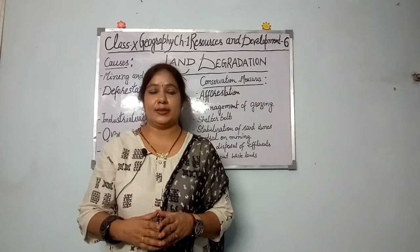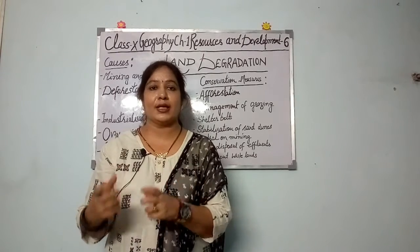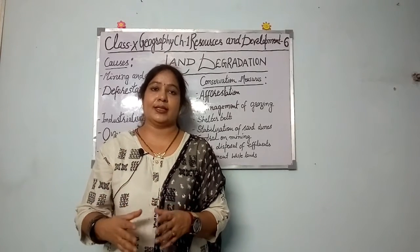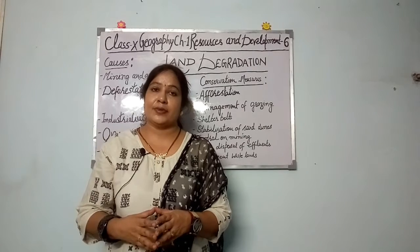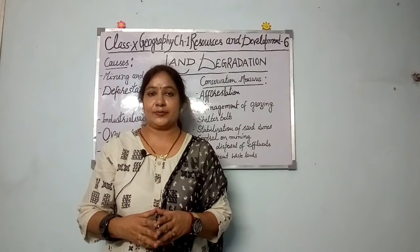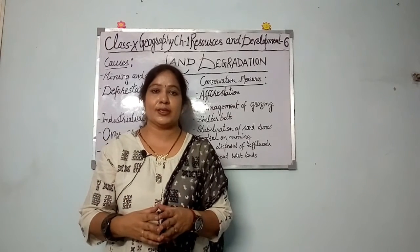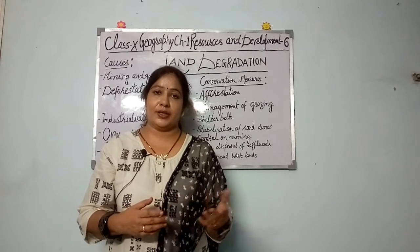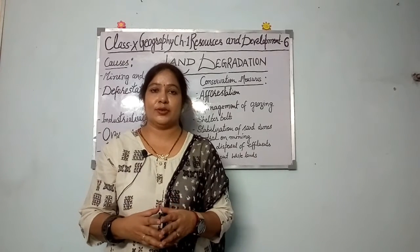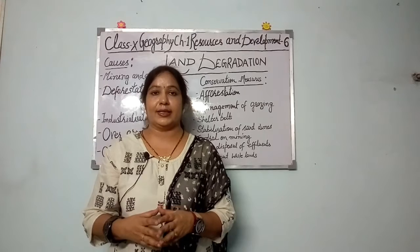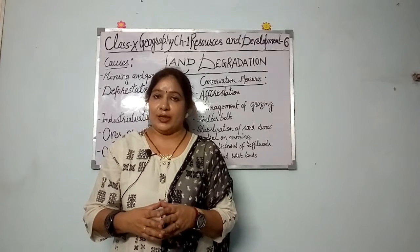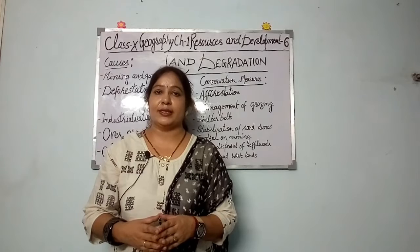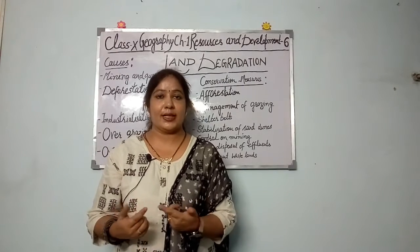India ki agar ham baat karein, toh lag-bhag 130 million hectare land degraded hai. Karan bahut saare ho sakti hai — deforestation ke karan bhi, water erosion bhi hai joh hamara land degraded hai. Toh agar ham reasons ki baat karte hai, causes of land degradation mein hum keh sakti hai: mining and quarrying, over-grazing, over-irrigation, industrialization.